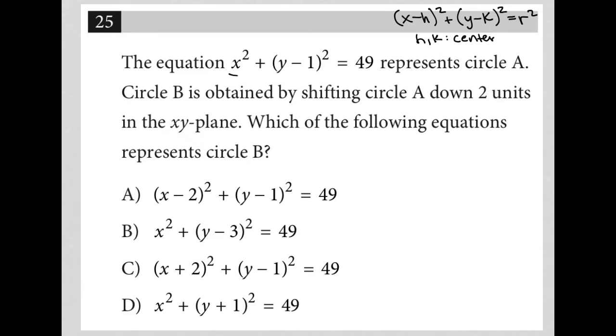So this equation is telling us that h for our equation is 0, because there's nothing associated with h there. k is positive 1, which means our center is 0 comma 1. And then our radius, r squared, is 49, which means our radius is 7.